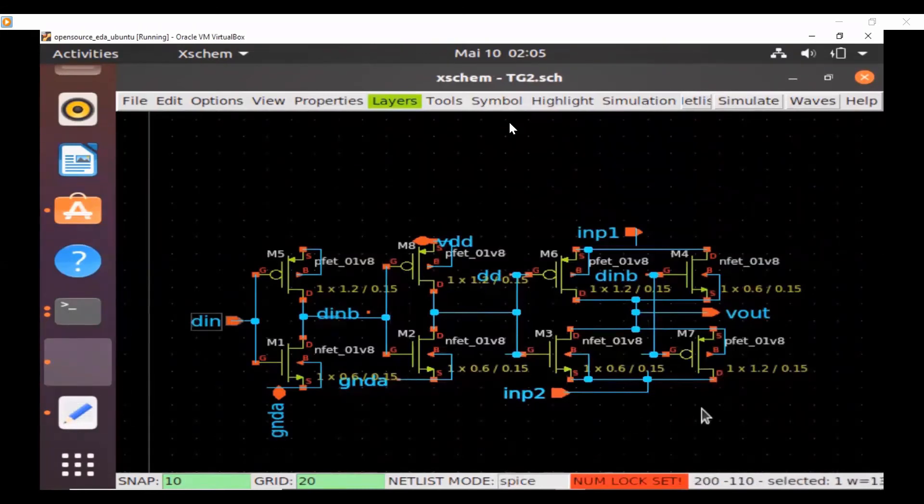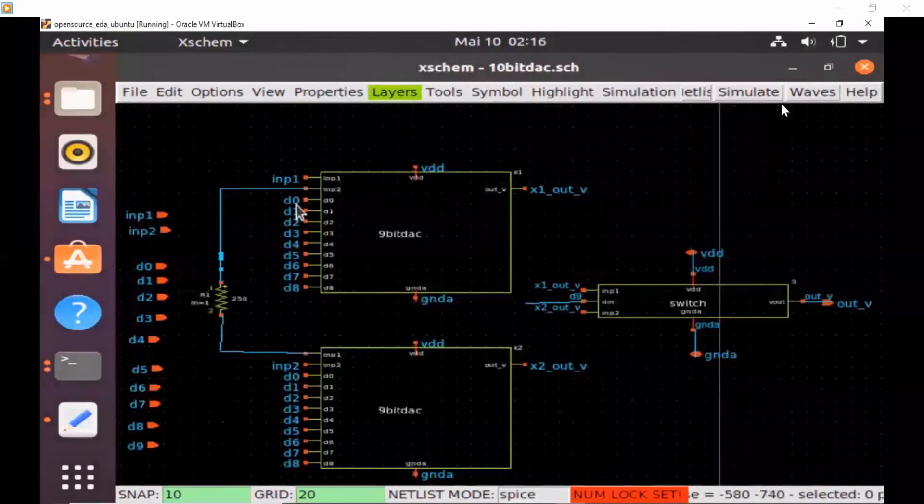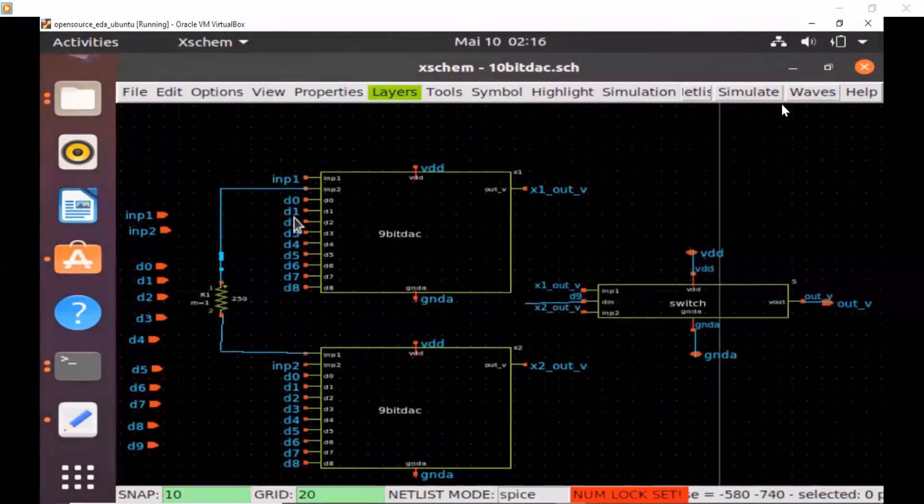I have already created symbol for this as well. I can use this block for my 2-bit DAC and also this is my basic switch symbol which I would be using it up till 10-bit DAC. As you can see for the 10-bit, we have total 10 digital input pins.